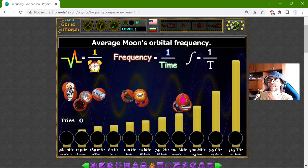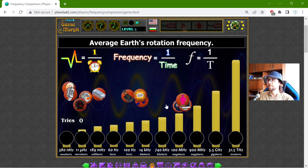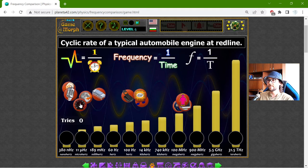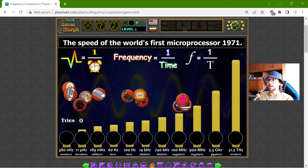What is that average moon's orbital frequency? I don't have hints. Alright. Let's begin with some computers. The speed of the world's first microprocessor in 1971.